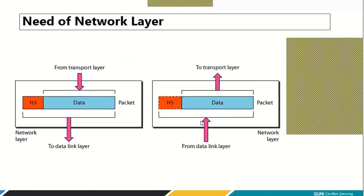In yesterday's example, if you remember, there were three local networks connected by two routers — Router 1 and Router 2. My source was inside Network 1 and my destination was inside Network 2. My source IP address was A and my destination IP address was B. If I want to carry the packet from source in Network 1 to the destination in Network 3 with two routers in between, my data link layer cannot do it — I need a network layer.